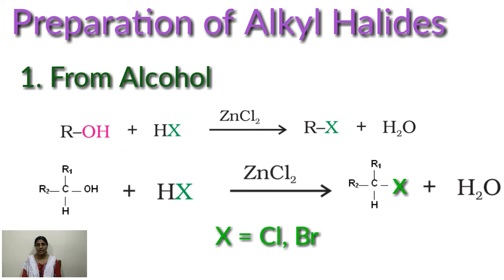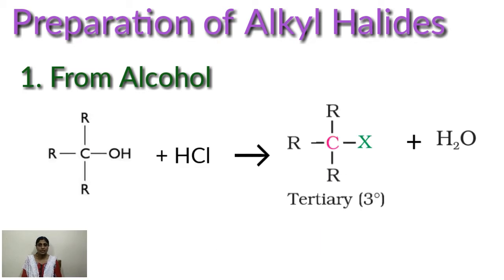If you are taking secondary alcohol like R2CHOH, on treating with HCl in presence of zinc chloride you will get R2CHCl plus H2O. In the case of tertiary alcohol, we need only shaking of that reacting mixture, that is tertiary alcohol with concentrated hydrochloric acid, and simply shaking you will get a tertiary alkyl chloride.